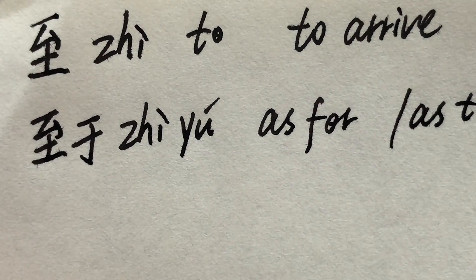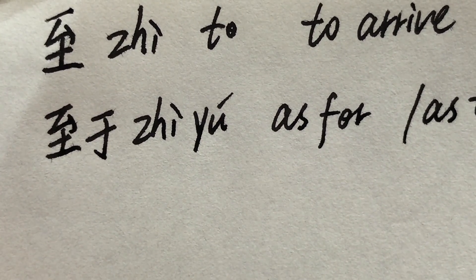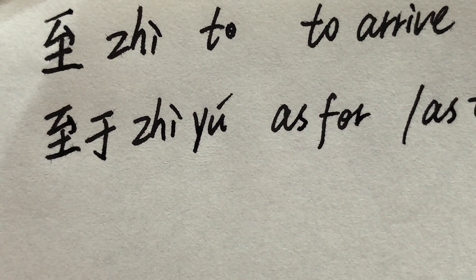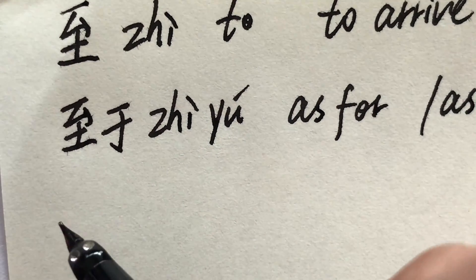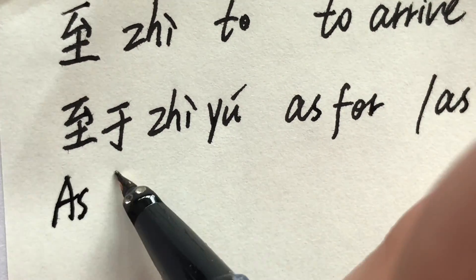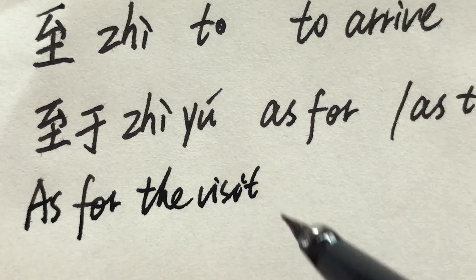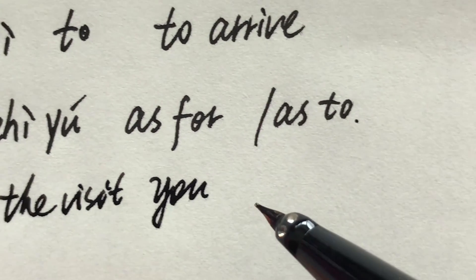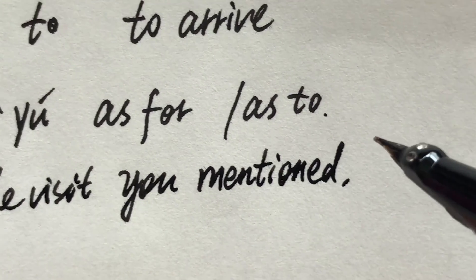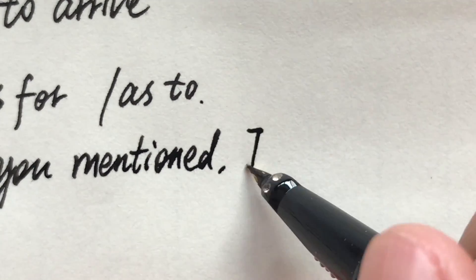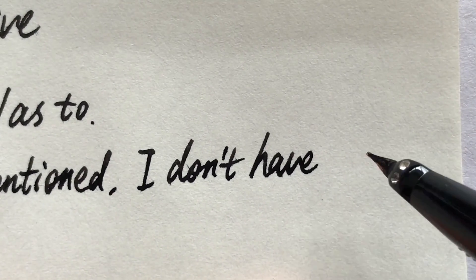Now check this sentence. As for the visit you mentioned, I don't have any information yet. Zhi yu ni tidao de fangwen, wo mu qian mei zhe fangmian de xiao xi. As for the visit you mentioned, I don't have any information.